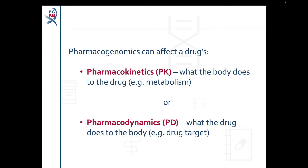Pharmacogenomics can affect the pharmacokinetics or pharmacodynamics of a drug. Pharmacokinetics, shortened to PK, is usually described as what the body does to the drug. This can include drug metabolism, where the drug is broken down by enzymes in the body. Pharmacodynamics, shortened to PD, is what the drug does to the body. An example of drug pharmacodynamics would be when a drug binds to a target in the body and has an effect. I'll go over more detailed examples of how pharmacogenomics can affect drug pharmacokinetics and pharmacodynamics on the next few slides.